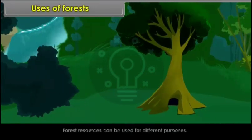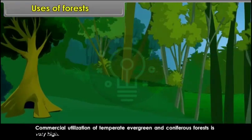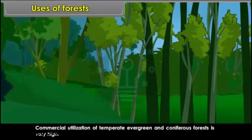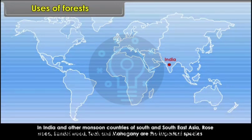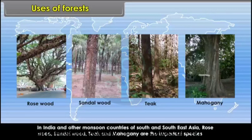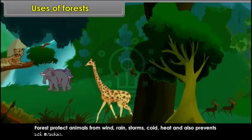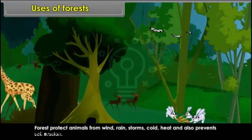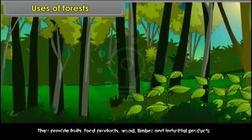Uses of forests: Forest resources can be used for different purposes. Commercial utilisation of temperate evergreen and coniferous forests is very high. Norway, Sweden, Finland and Canada are important exporters of forest products such as paper, wood pulp and newsprint. In India and other monsoon countries of South and Southeast Asia, rosewood, sandalwood, teak and mahogany are important species used economically. Forests protect animals from wind, rain, storms, cold and heat and also prevent soil erosion. They provide fruits, food products, wood, timber and industrial products.